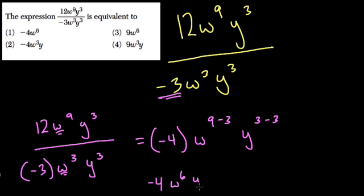And we have negative 4 now. W to the 6th, y to the 0, which is equal to negative 4w to the 6th. Because y to the 0 is just 1.